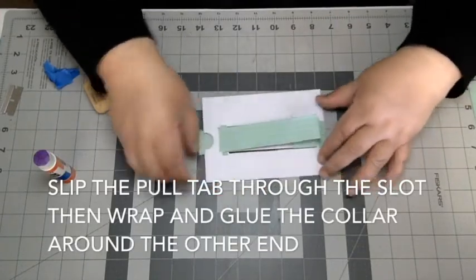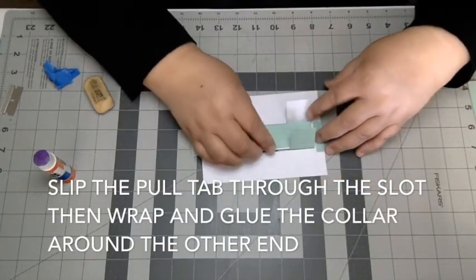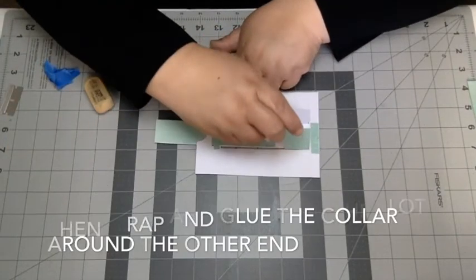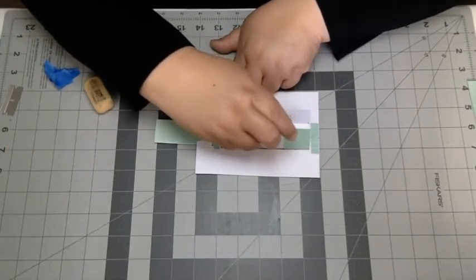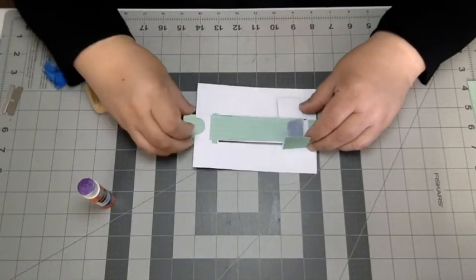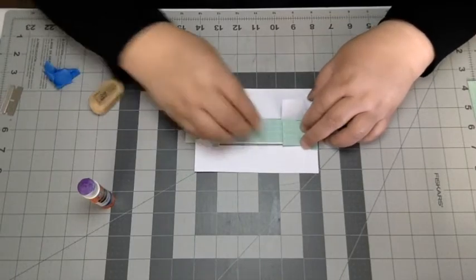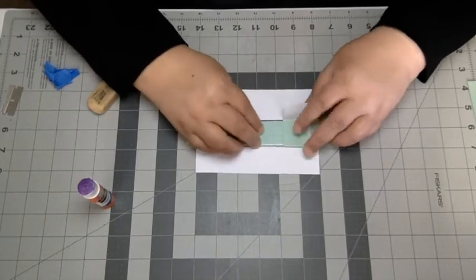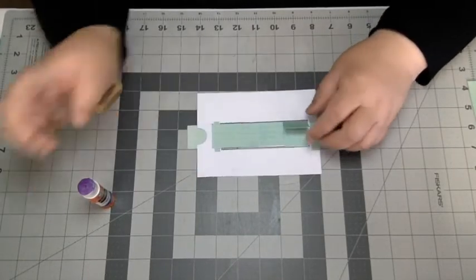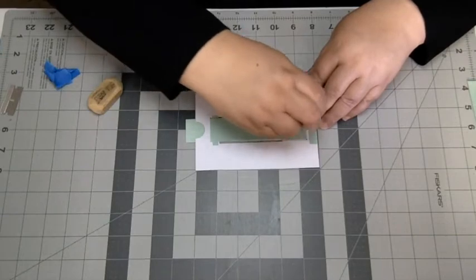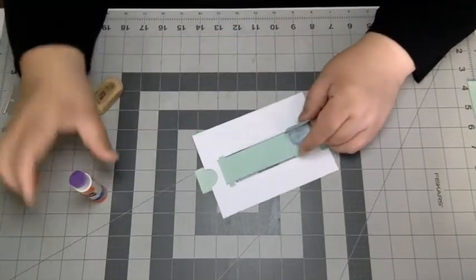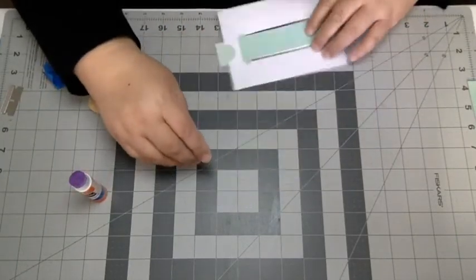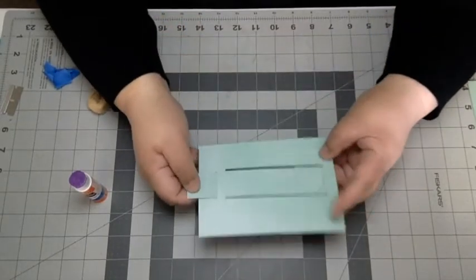And now I can just attach my pull tab. So putting the pull tab through from the back, through that pull tab slot, I can put glue onto the other side of the pull tab like this, and then glue down my collar. Just wrapping it around the back side of the pull tab. And then gluing the collar closed. And that's it.